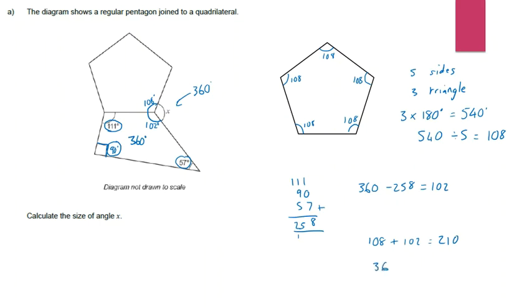The sum of angles around a point is 360. Adding the 108 and 102 that are around this point gives 210. Taking 210 away from 360 leaves 150. So angle X is 150 degrees.